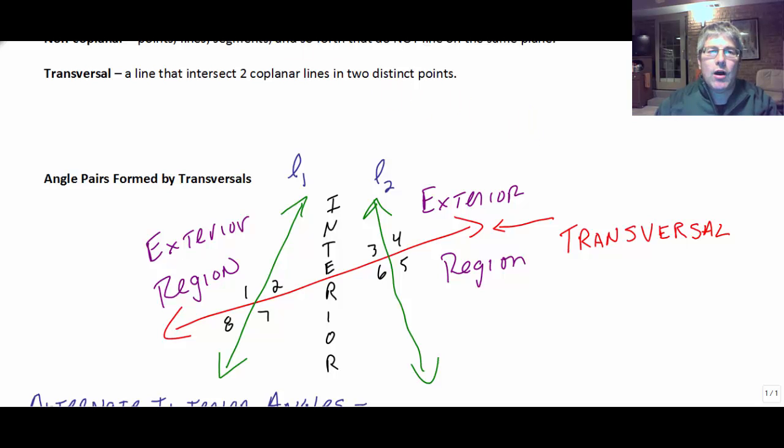And of course, we could draw this differently as well. You could draw your two lines this way, and then you have your transversal cut like that. So now this is going to be your interior region. And that's exterior. And that's exterior. So it might look something like that as well.